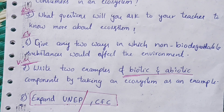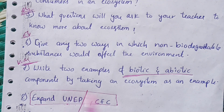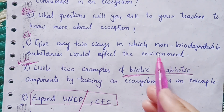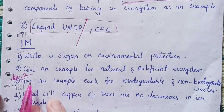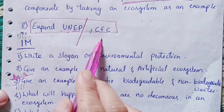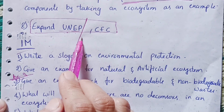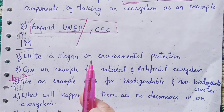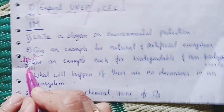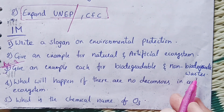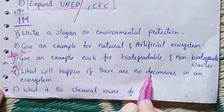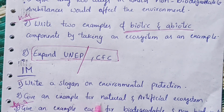Also focus on writing two examples of biotic and abiotic components, and any two ways non-biodegradable substances affect the environment. For one-mark questions, expanding UNEP and CFC is important — if they give both it's two marks. The third one-mark question on biodegradable and non-biodegradable is very important, and fourth — what happens if there are no decomposers — is also important.